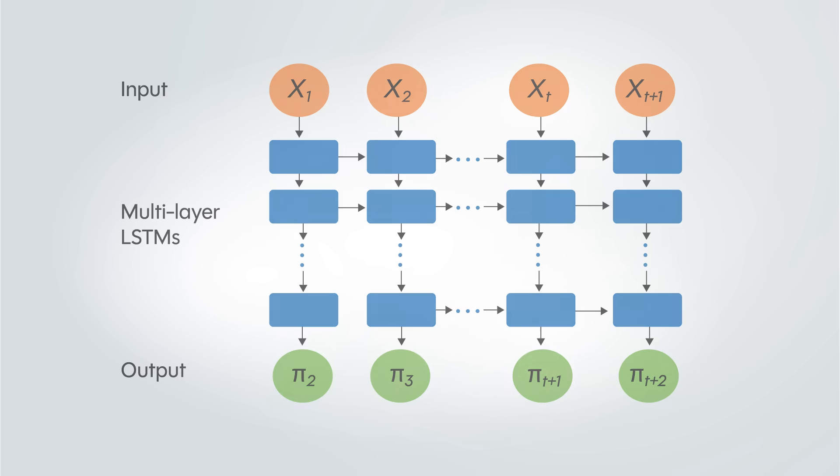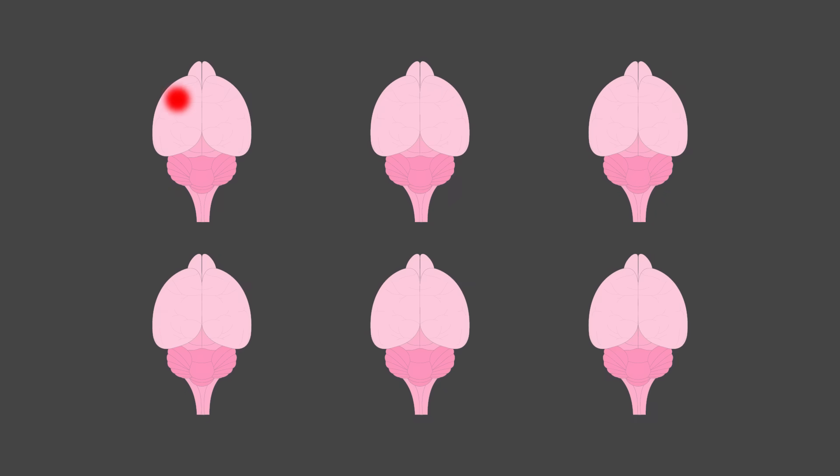Interestingly, the model successfully predicted activity even in regions that were not physically connected, suggesting the brain follows universal principles in generating activity.